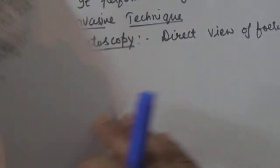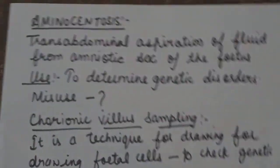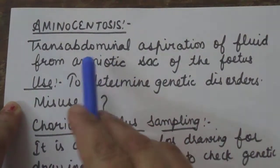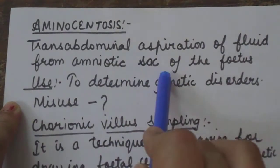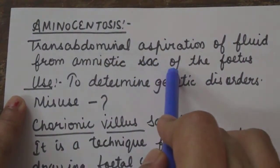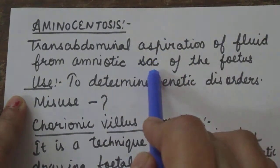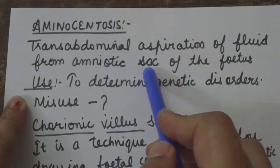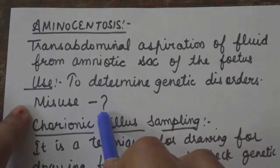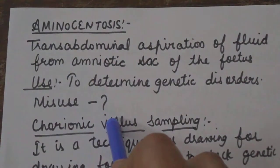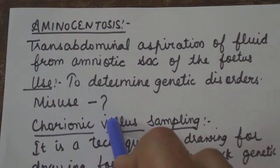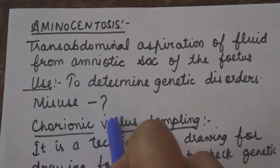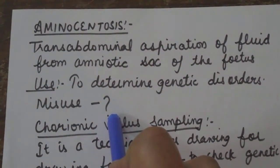Next is amniocentesis — the transabdominal aspiration of fluid from the amniotic sac of the fetus. This fluid is used to diagnose genetic disorders, if any, in the embryo, or to determine the sex of the child. However, today this is misused in our country for killing the normal female fetus. Determination of sex by this method has been banned, and understanding the equality of sexes can help end this malpractice.